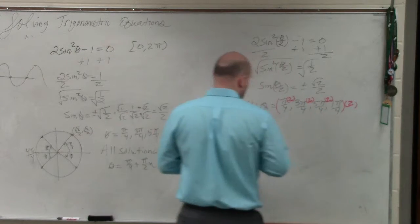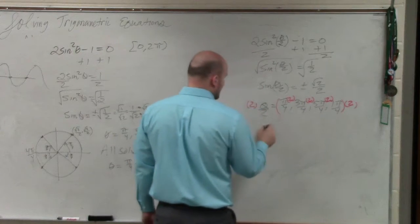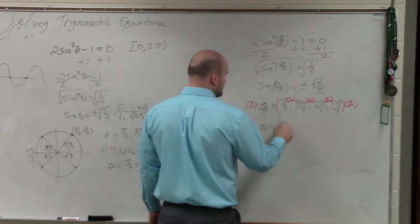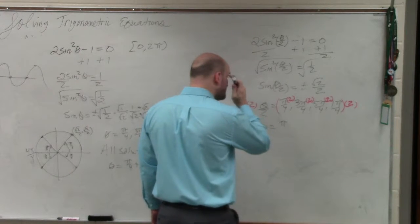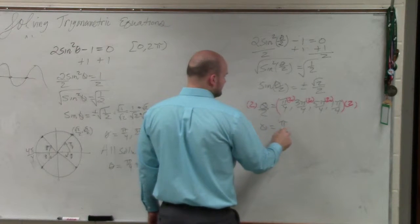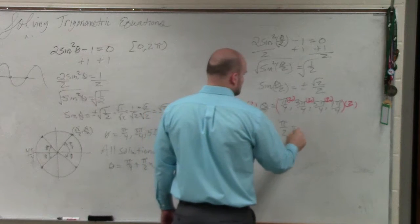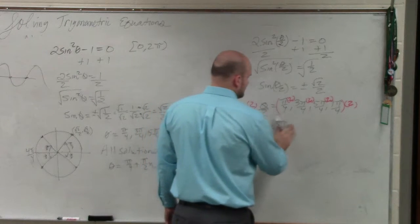So, therefore, I'll now have theta equals pi over 2, which is pi halves. 6 pi over 4, which is 3 pi halves.